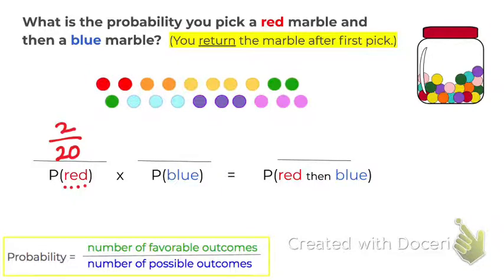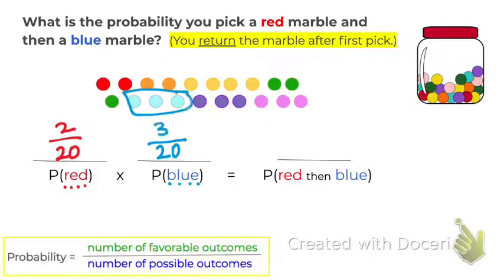So let's say we did pick a red marble, but then we returned it to the jar. Now let's calculate the probability of picking a blue marble. The number of possible outcomes — we count how many marbles — there are still 20 because we returned that red marble after our first pick. How many are favorable if we're finding the probability of picking a blue? 3. So 3 out of 20 is the probability of picking a blue marble on our second pick.